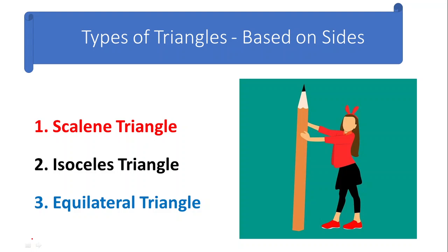After seeing the definition, let's try to classify the triangles available. For classifying triangles, we have two bases: first one is based on the sides and another one is based on the angles. Let's see what is the classification based on the sides. Based on the sides, we have the scalene triangle, isosceles triangle, as well as the equilateral triangle.